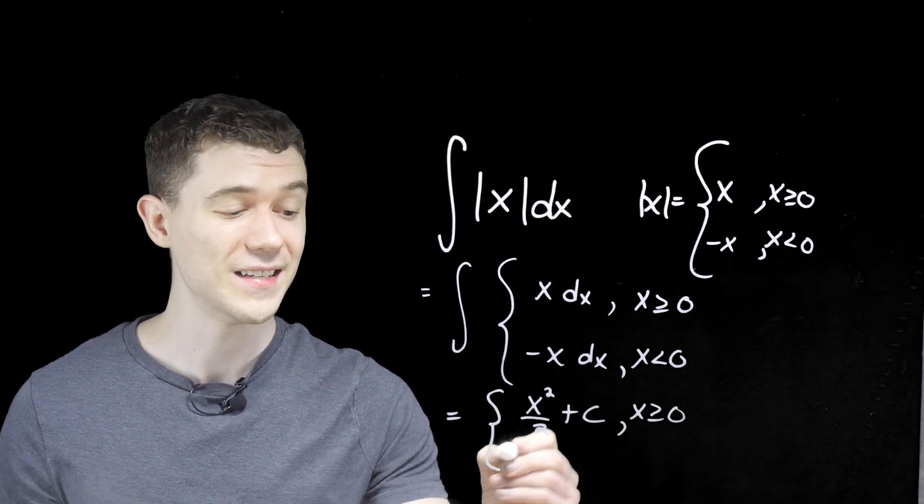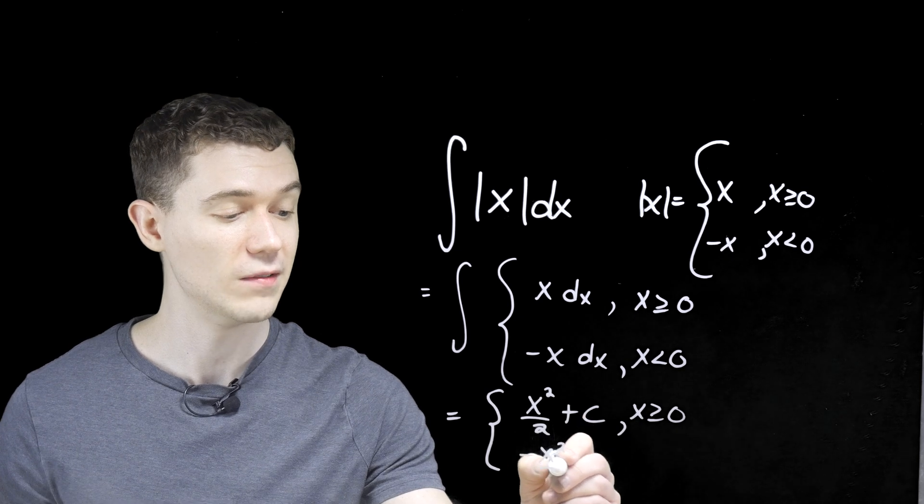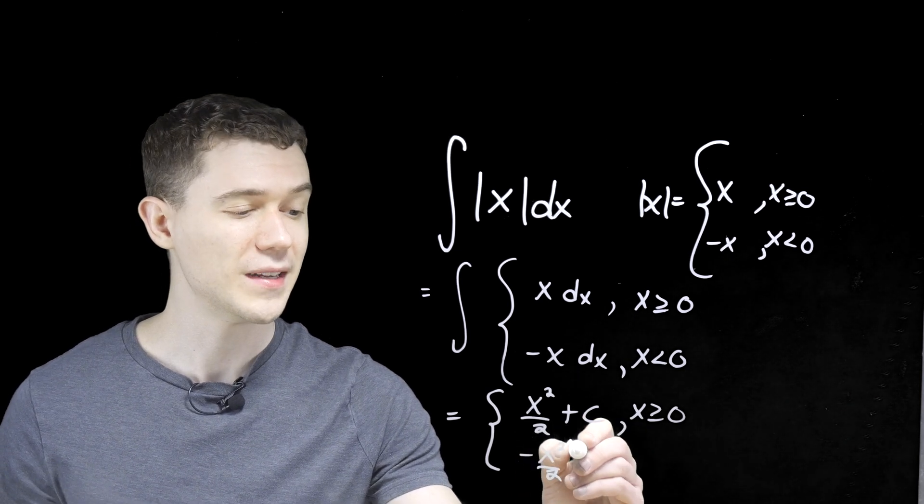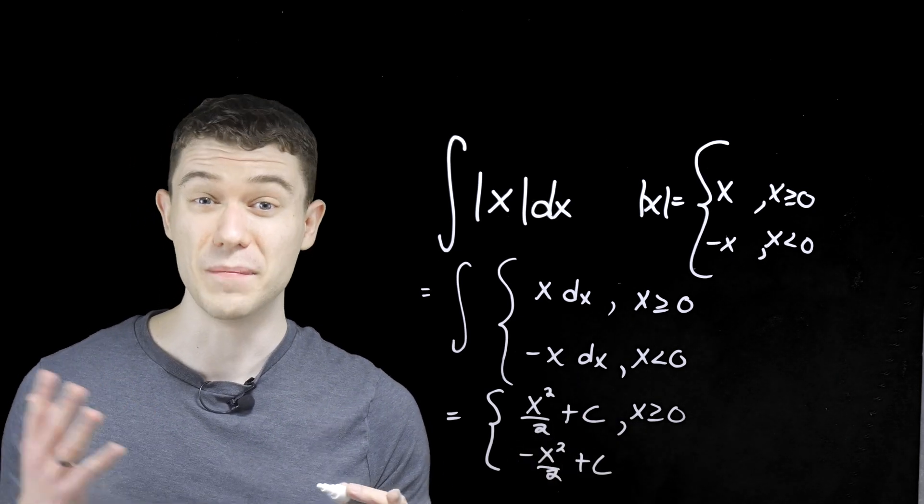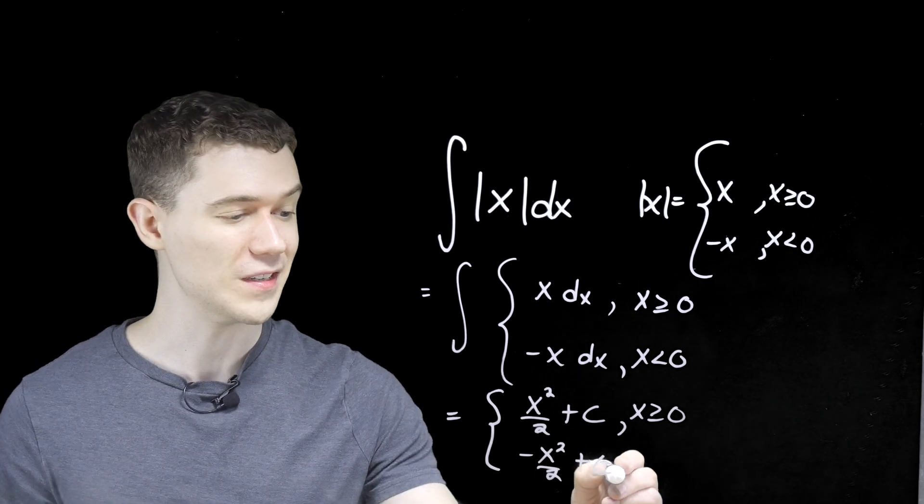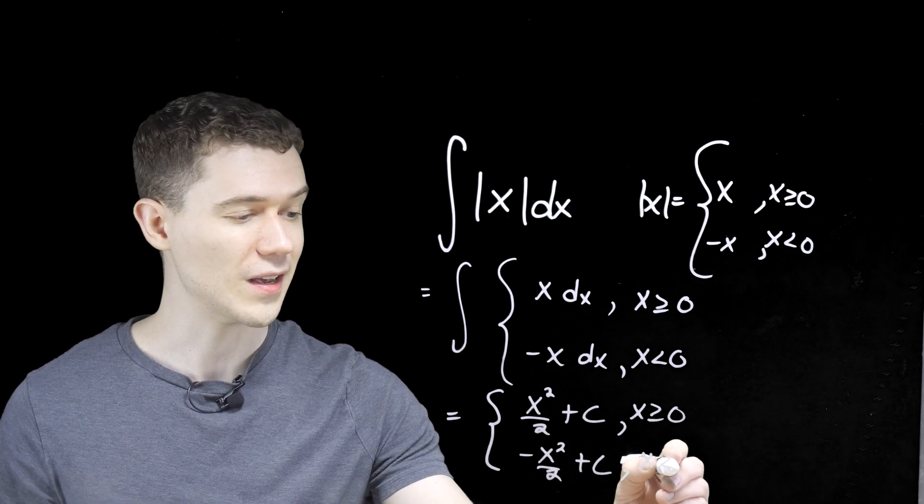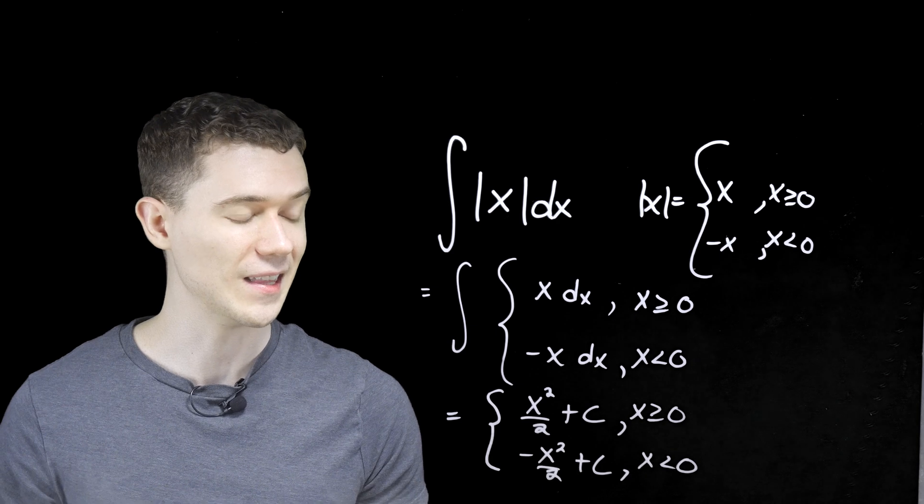And same deal for minus x. Add one to the power, divide by the new power. I need plus c. Again, maybe I'm slightly abusing the notation here using two c's, but I think we're okay. You'll get the idea. And that's if x is less than zero.